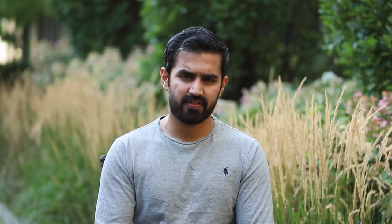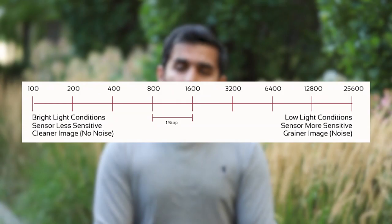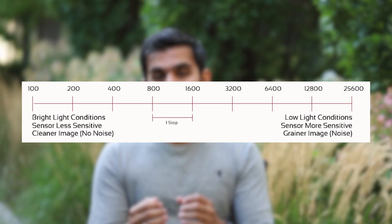ISO is also measured in stops. To gain one extra stop of light with ISO, simply double it: ISO 100 to 200 is one stop, 200 to 400 is another, 400 to 800 is yet another. Double or halve the ISO value to move one stop up or down — the same principle as shutter speed.